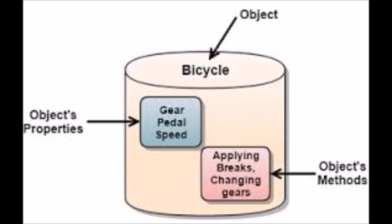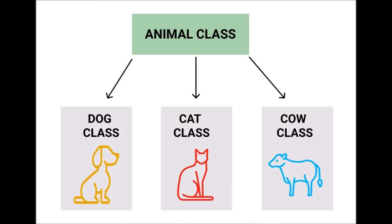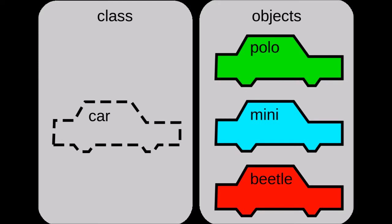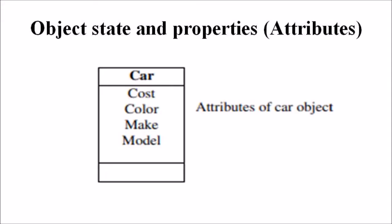New object classes can be built from the objects supplied by the object-oriented system. The object state and properties — or attributes — represent the state of an object. In object-oriented methods, we refer to the description of these properties rather than how they are represented in a particular programming language. For example, color can be declared as a character to store a sequence of characters like red or blue, as a number to store a paint stock number, or as an image or video file to refer to a full-color video image. The importance of this distinction is that an object's abstract state can be independent of its physical representation.